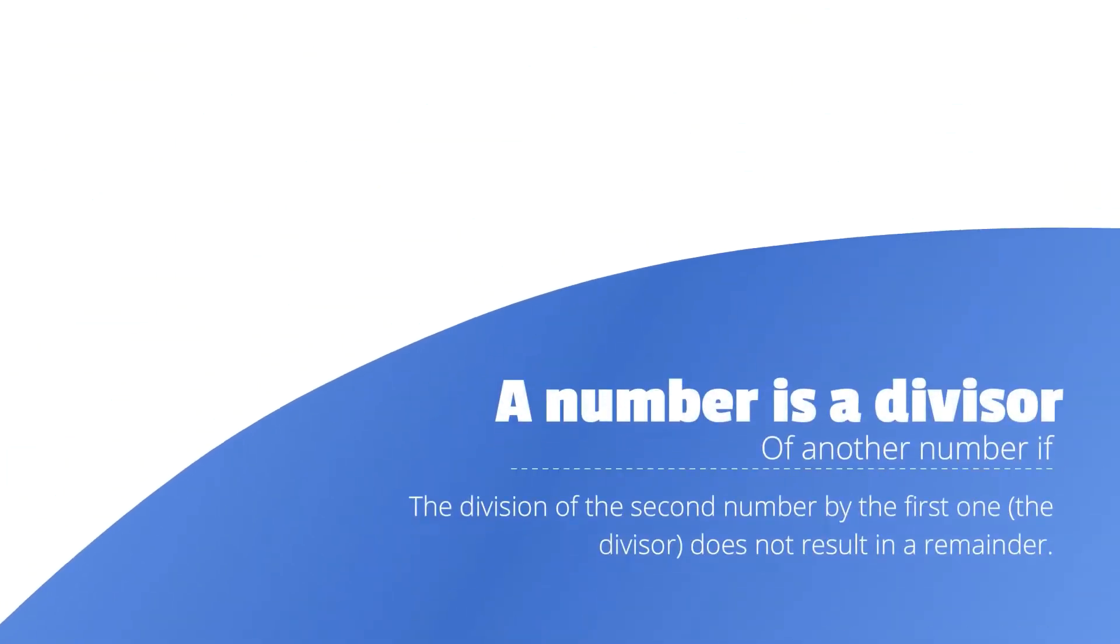A number is a divisor of another number if the division of the second number by the first one, the divisor, does not result in a remainder.